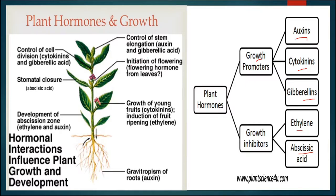Auxin also controls various other activities including apical dominance. Stem elongation is controlled by auxin as well as gibberellic acid. The initiation of flowering occurs through a flowering hormone synthesized in the leaves that travels to the site where flowering will occur. Cytokinin's main function is cell division. Auxin, gibberellic acid, and cytokinin help in growth through various activities. Seed germination and breaking of dormancy are also controlled by various hormones in plants.